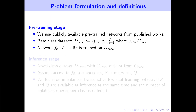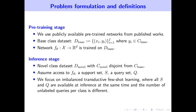Regarding the problem formulation and definitions: for the pre-training stage, we use publicly available pre-trained networks from published works. The network Fθ is trained on Dbase, which is a dataset where every image XI has a corresponding label YI from Cbase. At inference stage, we assume access to a novel class dataset D-novel, with C-novel disjoint from Cbase. We also assume access to the pre-trained Fθ, a support set S, and a query set Q. We focus on the imbalanced setting, where all examples from S and Q are available at inference simultaneously, and the number of unlabeled queries per class is different.